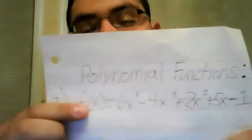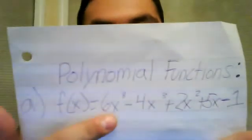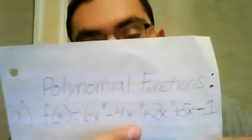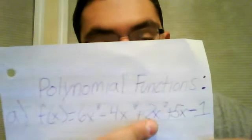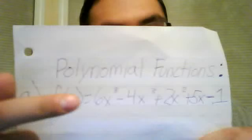Start off with this function first. f of x equals 6x to the 8th minus 4x cubed plus 2x to the 5th plus 5x minus 1.